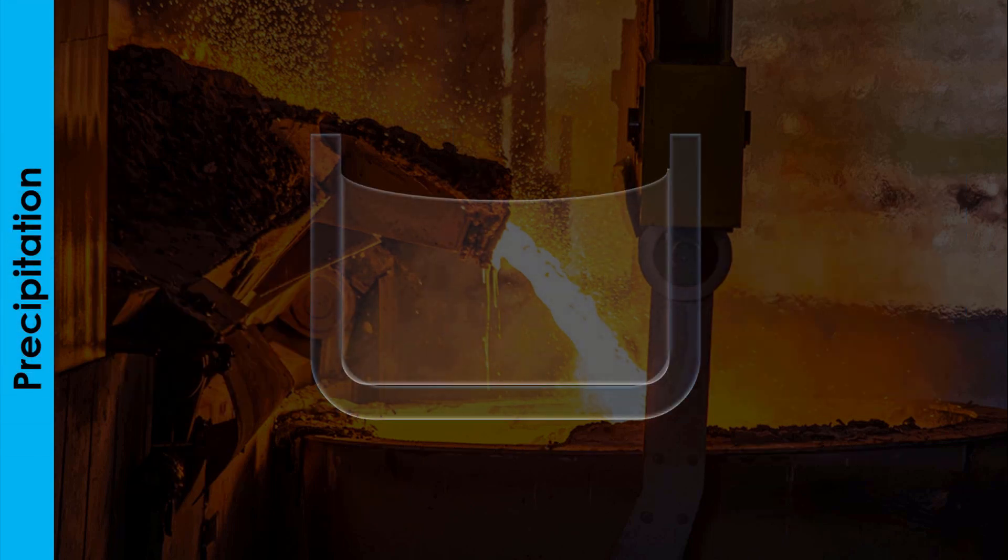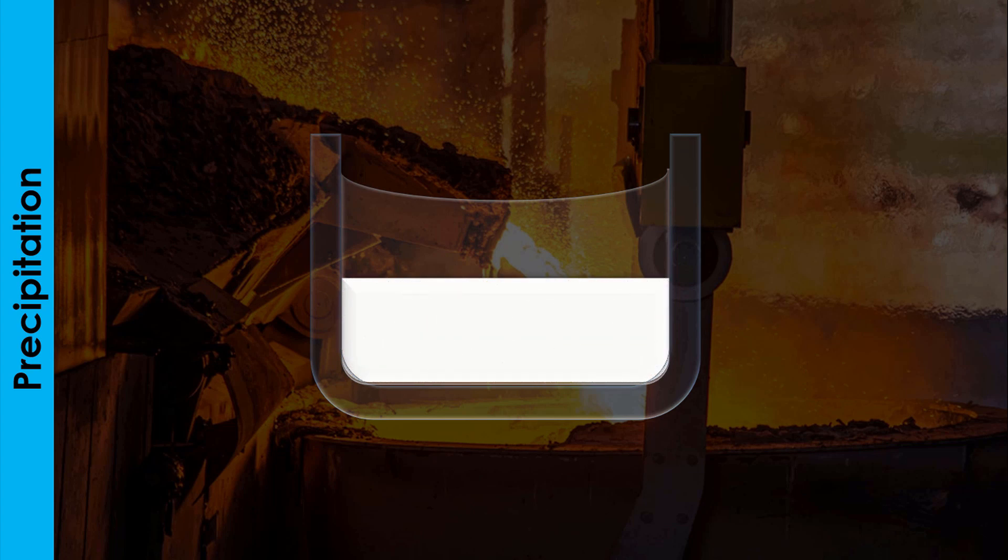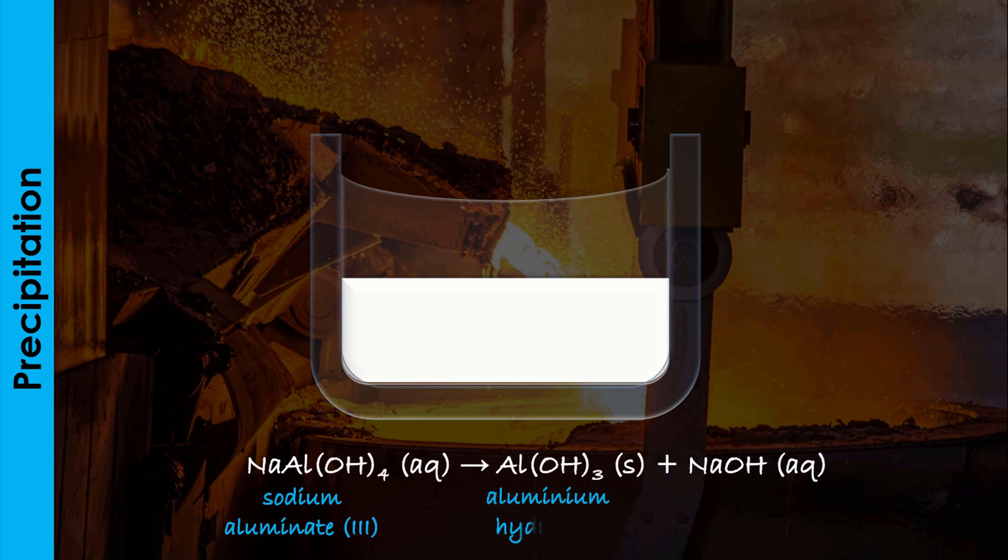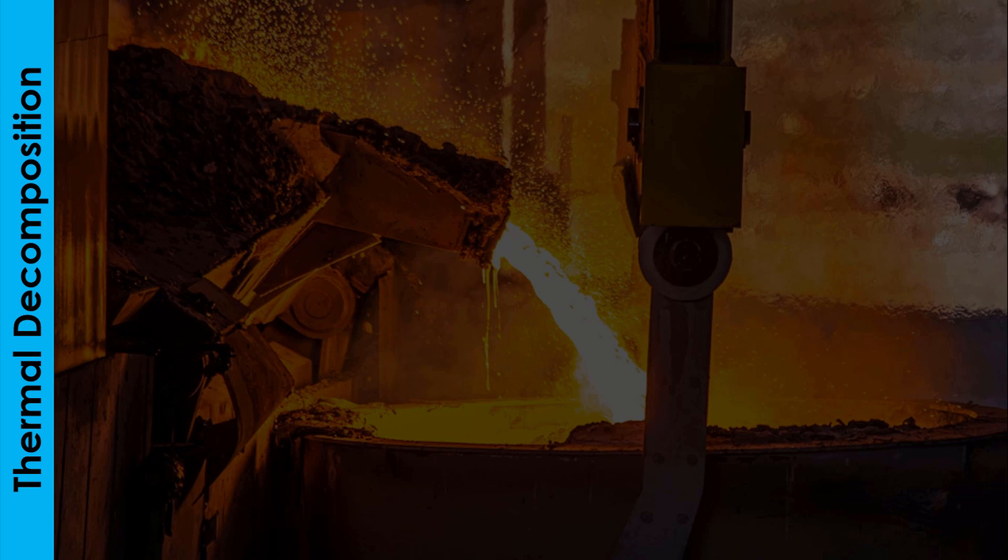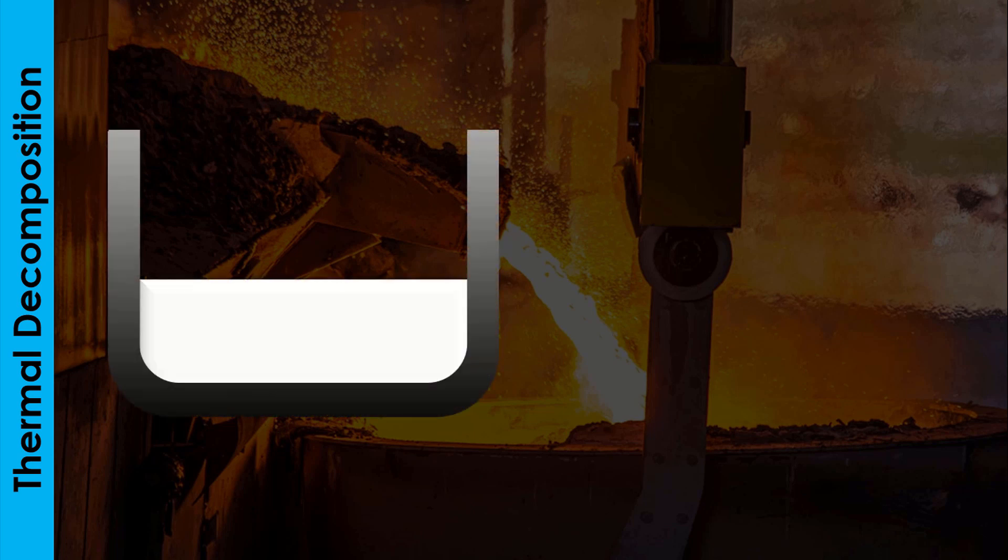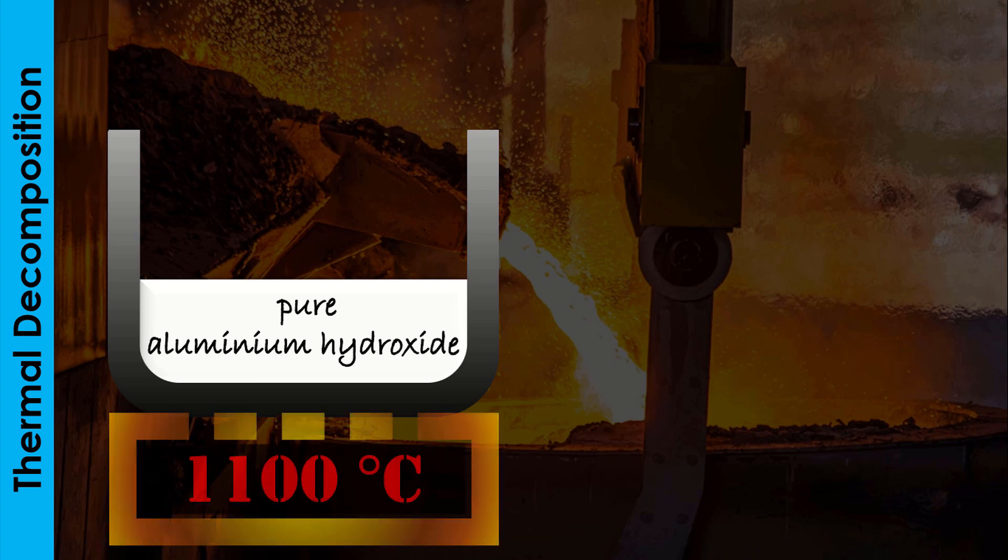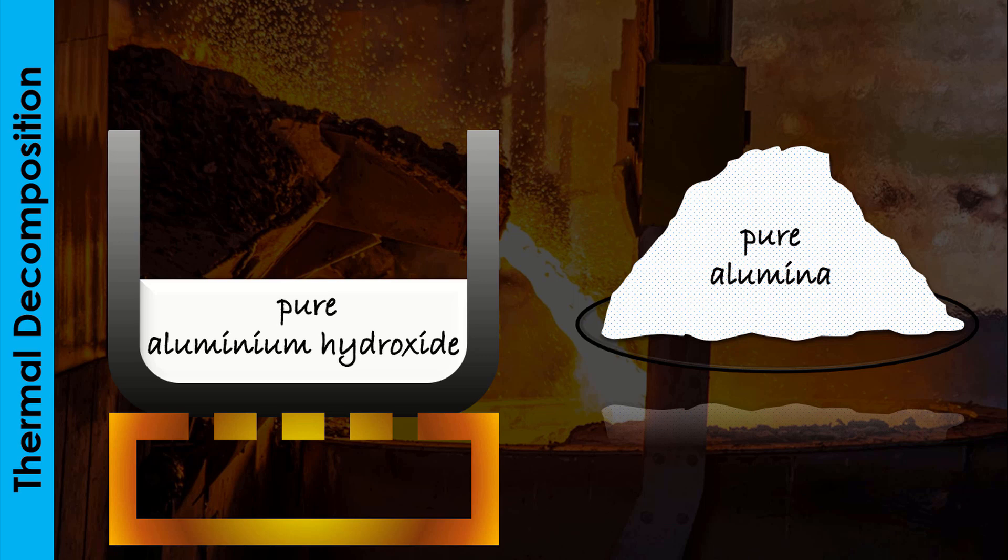The second stage involves the precipitation of aluminum hydroxide from the filtrate by adding pure crystals of aluminum hydroxide to induce the process of precipitation as shown in the equation on the screen. The precipitated aluminum hydroxide is filtered out, washed, and dried. It is then heated strongly to about 1,100 degrees Celsius to yield pure anhydrous aluminum oxide and water vapor.